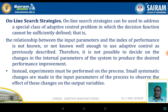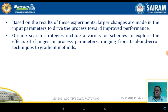Online search strategies can be used to address a special class of adaptive control systems in which the decision functions cannot be sufficiently defined. The relationship between the input parameter and the index of performance is not known well enough to use the adaptive control previously described. Therefore, it is not possible to decide on the change in internal parameters to produce a desired performance improvement. Based on the results of experiments, large changes are made in the input parameters to drive the process towards improved performance. Online search strategies include a variety of schemes that explore the effect of changes in process parameters by means of trial and error techniques.